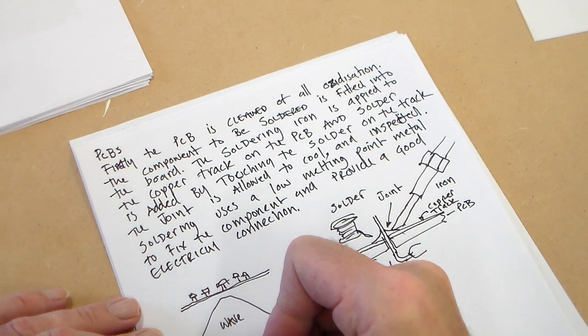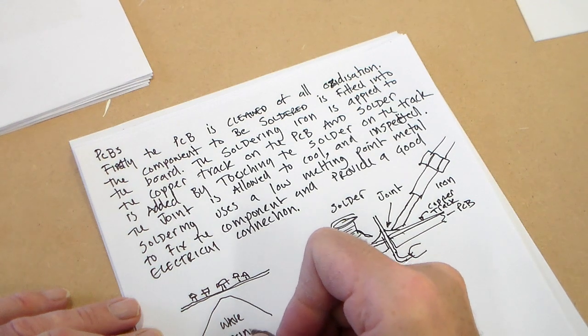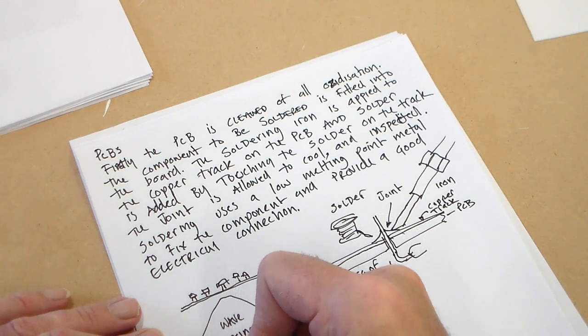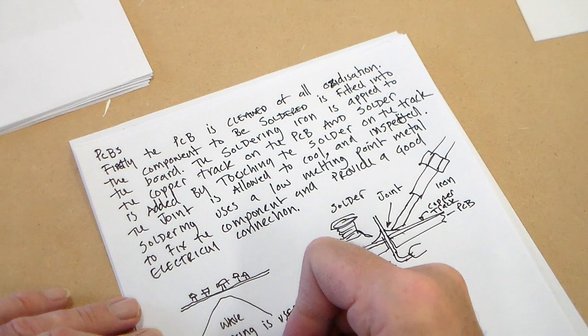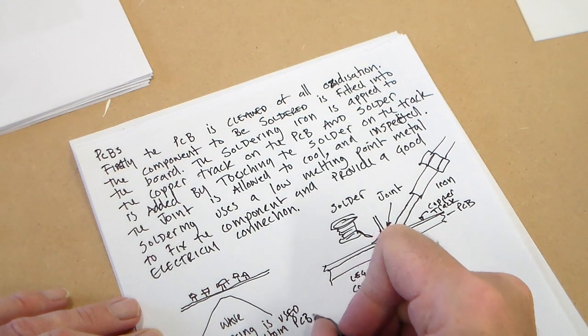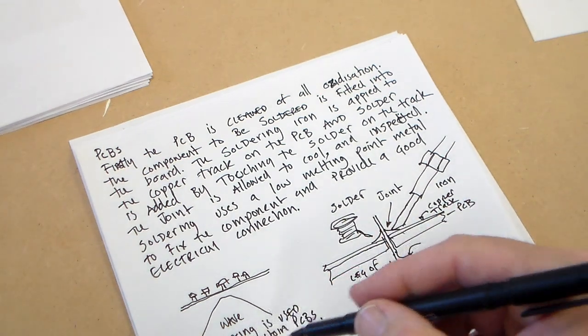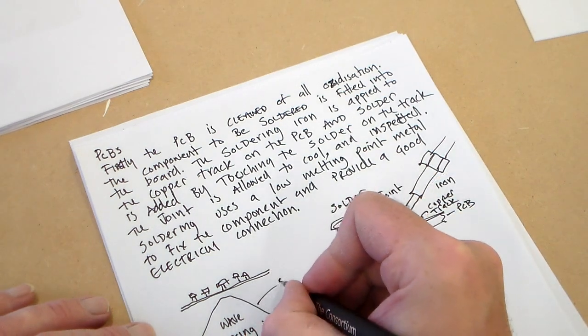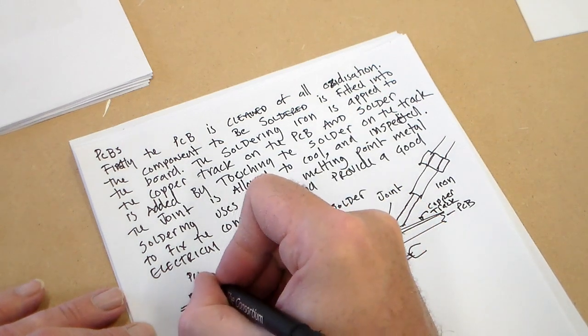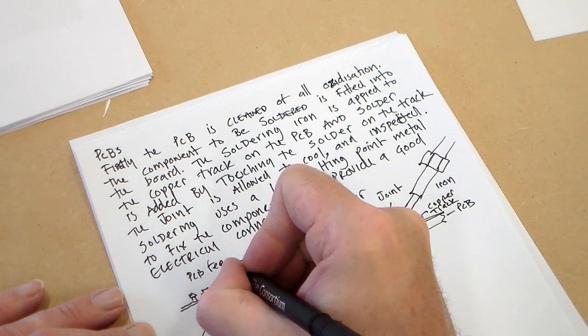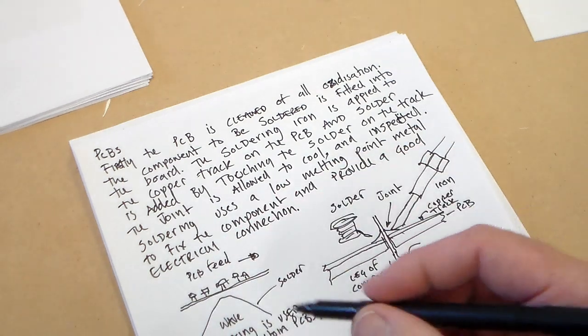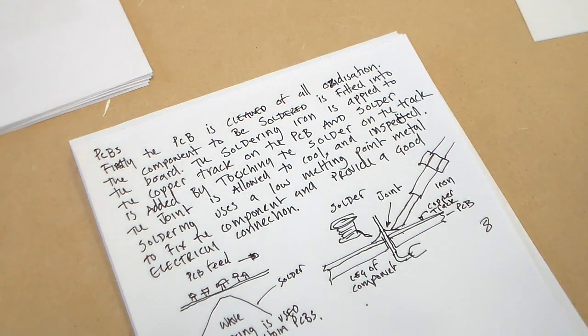We could say wave is used for mass production PCBs. So, for mass production PCBs, the wave here of, I see solder. So, the PCBs fed across here, there's a wave of solder, and this solders the components on. So, I think there, we've got our eight marks.